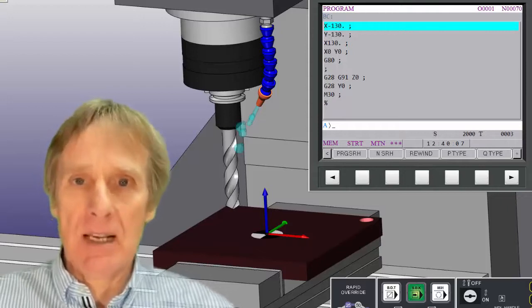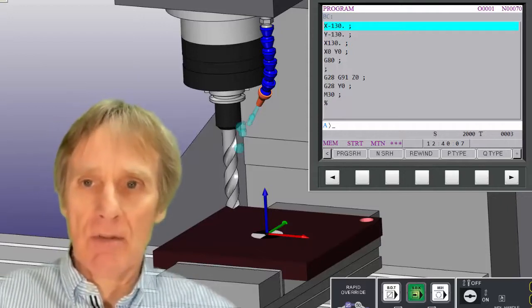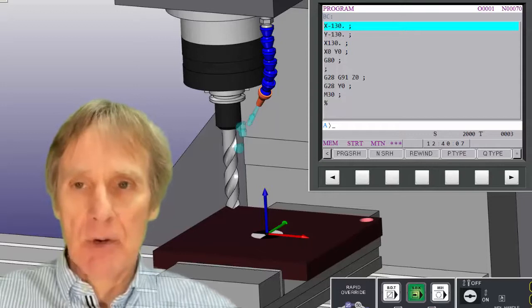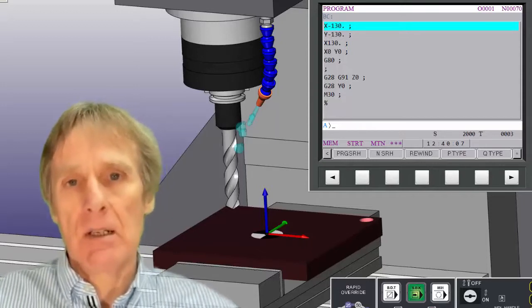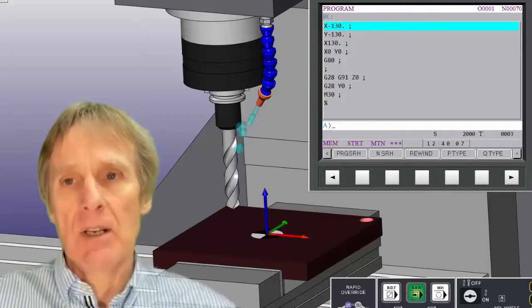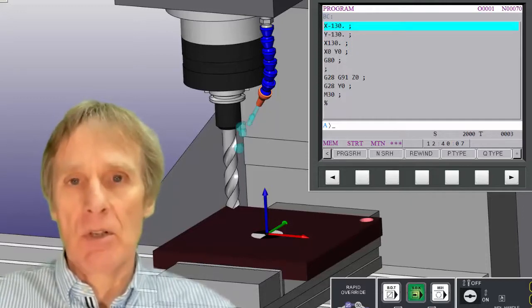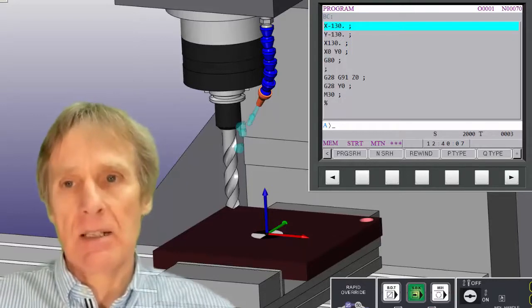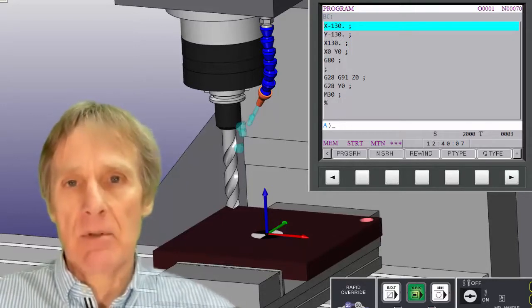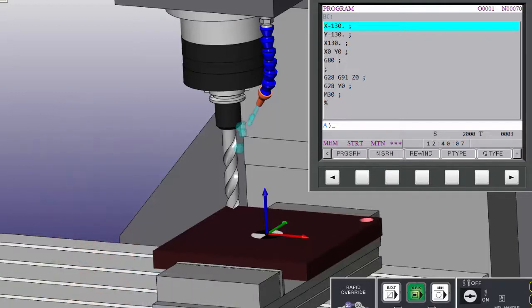So whether it's the table moving or the tool moving or whatever on the actual machine, the program will always be the same. So if you program off the machine and imagine that the tool is always moving, then when you put it on the machine it will always work no matter what the machine, because the machine is to an ISO standard. It's always going to move in that same direction.